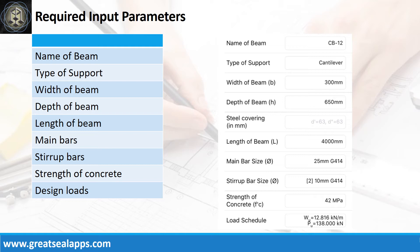Main bars: 25 mm bar at grade 414, Stirrup bars: 10 mm bar at grade 414, Strength of concrete: 42 MPa, Factored uniform load: 12.816 kN per meter, and factored concentrated load: 138 kN.